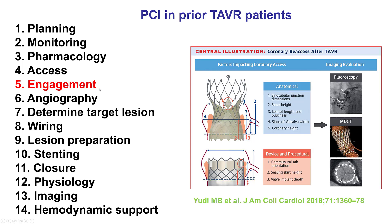Engagement can be challenging for various reasons that have to do with the patient's anatomy and the prosthetic valve. In general, having the CoreValve Evolute makes it much harder for accessing the coronary arteries compared with the Sapien valve. Also, a higher valve implantation makes it harder to engage, as well as when the commissural posts are aligned with the coronary ostia.